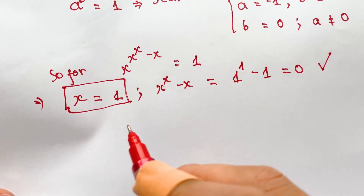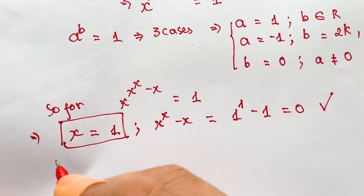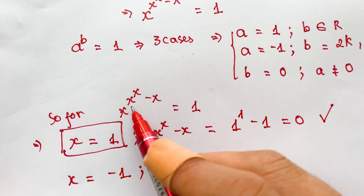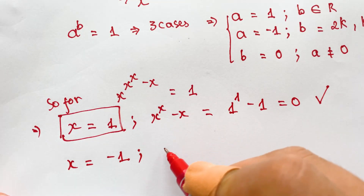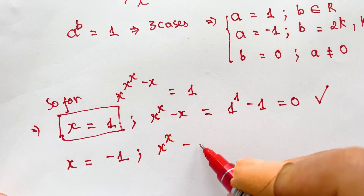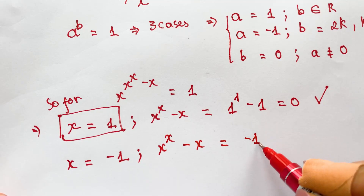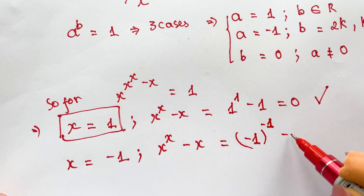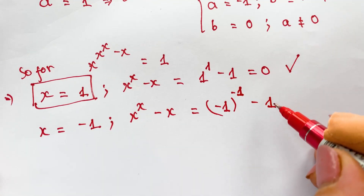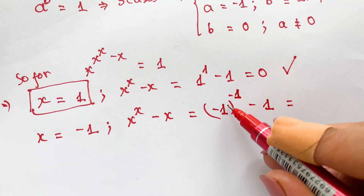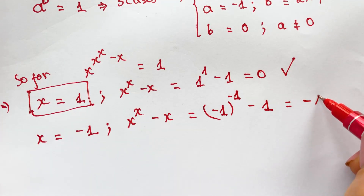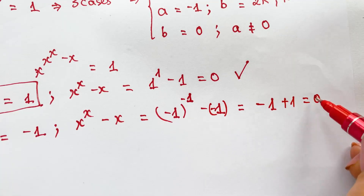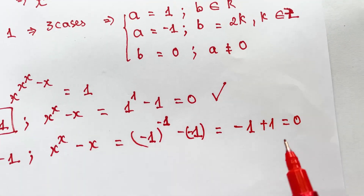For Case 2, x = -1. We compute the power b = x^x - x = (-1)^(-1) - (-1) = -1 + 1 = 0.